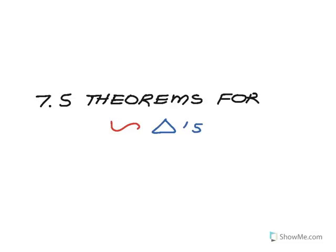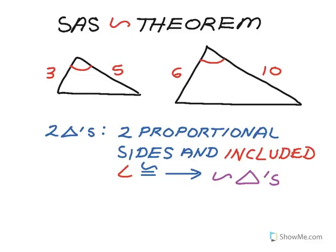Lesson 7.5 is about theorems for similar triangles. The first of the two theorems we're going to learn about is the side-angle-side similarity theorem. Like the name side-angle-side implies, with the A in between the two sides, we have two similar triangles if certain conditions are met.